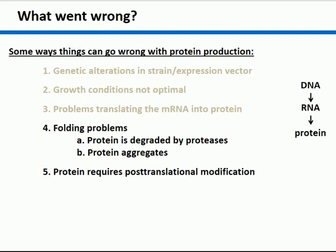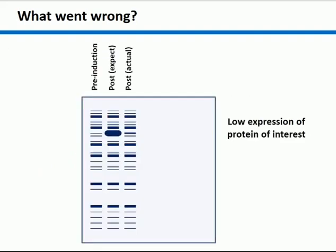Finally we'll talk about post-translational modifications. To come back to our troubleshooting issue: we have a protein we're trying to produce. We take our whole cell lysate, run it out, see all the proteins in the cell, add our IPTG or heat shock or cold shock — whatever induces expression of our protein — and we expect a big fat band, but in fact we see a tiny little band. Very low expression. The question is: what went wrong?